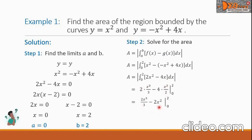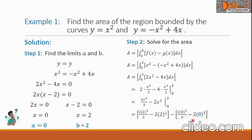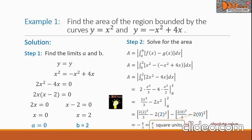We can simplify further this expression. Now we are ready to evaluate with respect to the limits of integration. So we have 2 times 2 cubed over 3 minus 2 times 2 squared, minus 2 times 0 cubed over 3 minus 2 times 0 squared. The second group comes down to 0, so we can cancel it out. While the first group simplifies to negative 8 over 3. But since this is an area, we take the absolute value. The final answer is 8 over 3 square units.